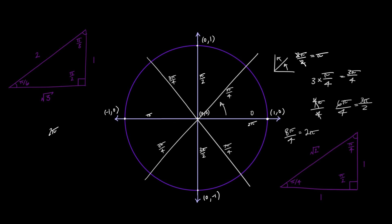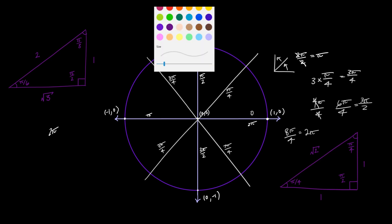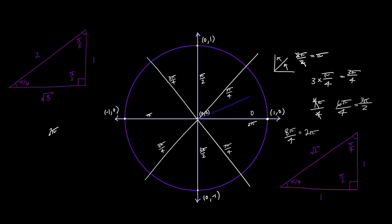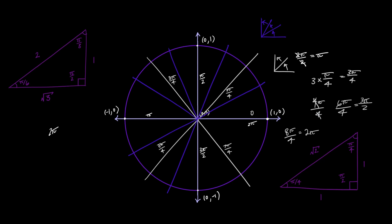We can continue taking sections of the circle to get all the other angles. Next, we take the pi over 2 section and divide it into thirds, giving 1, 2, 3 sections. Mirroring this around the full circle, we get 6 total divisions of the pi section, so one of these starting at 0 is pi over 6 radians. Taking that pi over 6 turn twice gives 2 pi over 6, which reduces to pi over 3 radians.